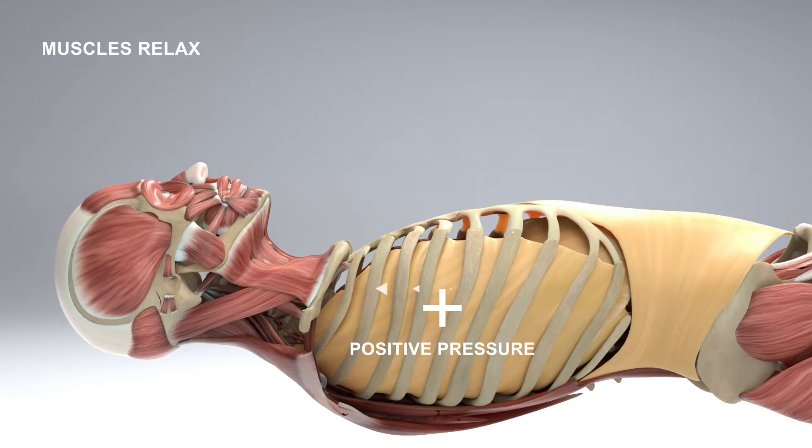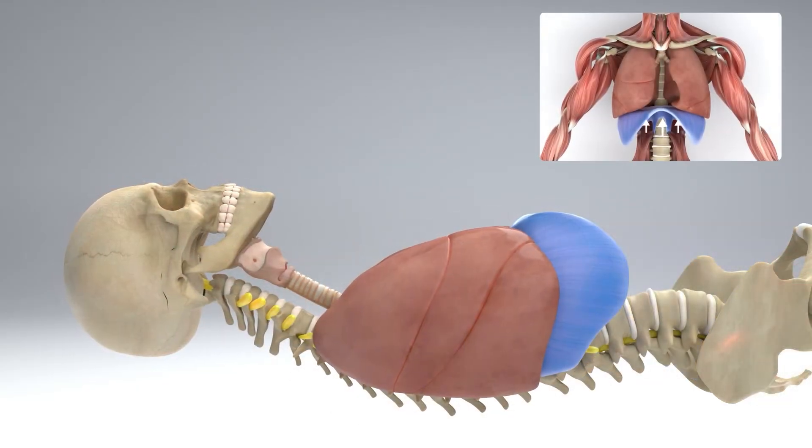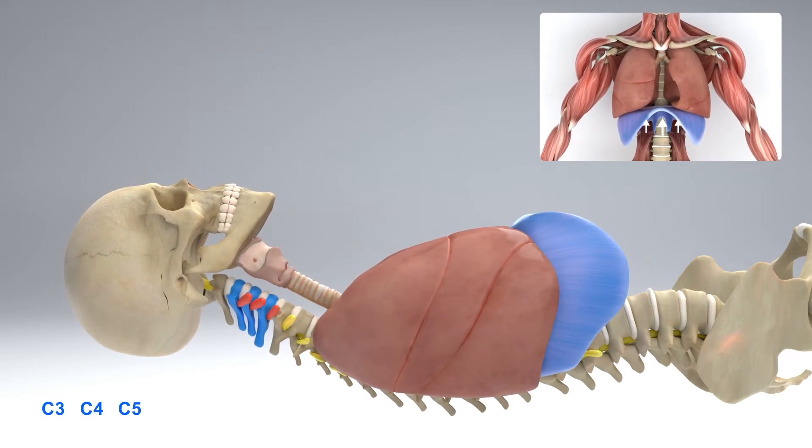When the diaphragm contracts, it moves down and we breathe in. Its nerve supply is from C3, 4, and 5 in the spinal cord in the neck.